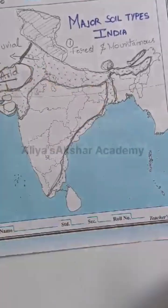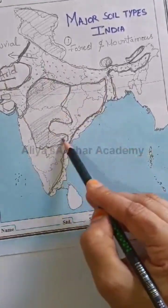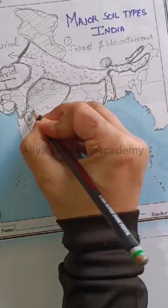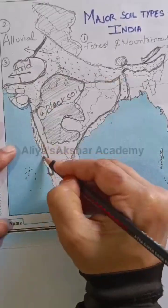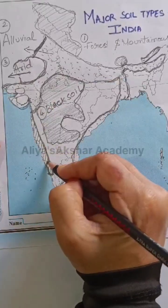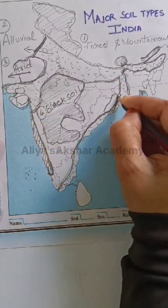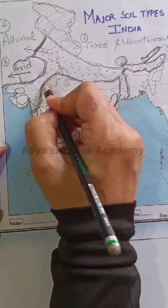Just below, we have black soil in the Deccan Plateau and interiors of Gujarat. The western coastal plains have laterite soil.